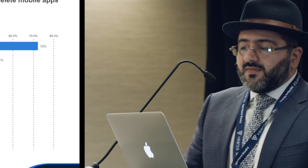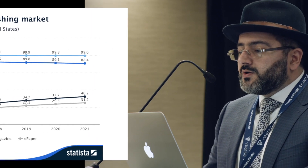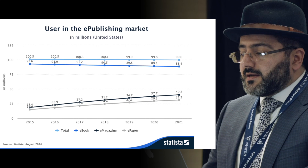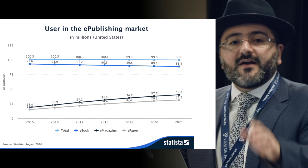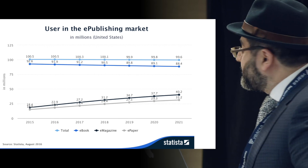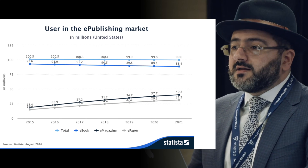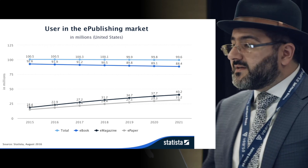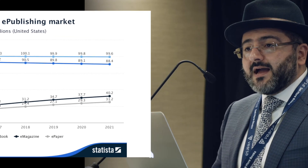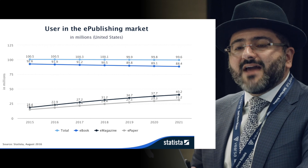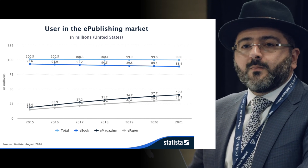Users in the e-publishing market: by 2021, there will be approximately 99.6 million users in the e-publishing market total, with the e-book market at 88.4 million users, the eMagazine market at 40.2 million, and ePaper at 31 million users. iShook can realistically target those 99.6 million users. Beyond the e-book platform, we also have a messenger app engagement, drawing every type of user toward the end result of reading in iShook.